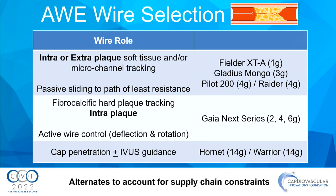The second category is steerable wires, meant to provide tactile feedback so you can direct them. The idea is you use your first wire to go wherever it goes, then use the steerable wire to redirect away from where you've deflected off course. These have tactile feedback and you can feel what the wire is doing in your fingertips. The wires most commonly used are the GAIA series. The third category is the penetration wire — used just to make a hole, typically in conjunction with IVUS guidance.